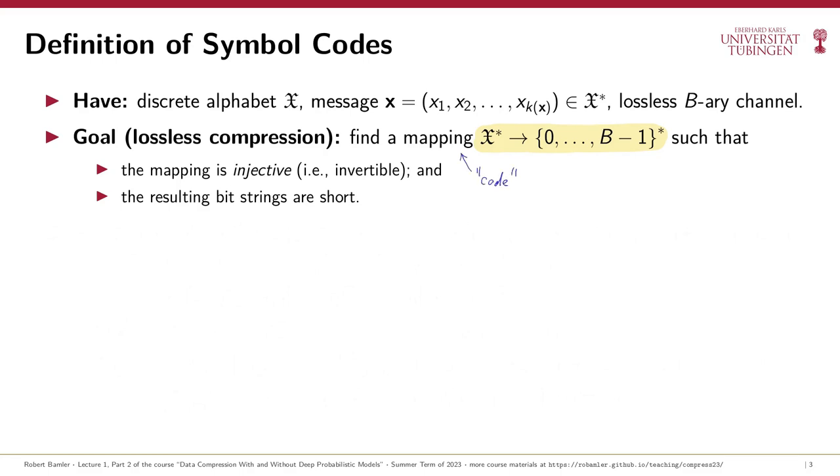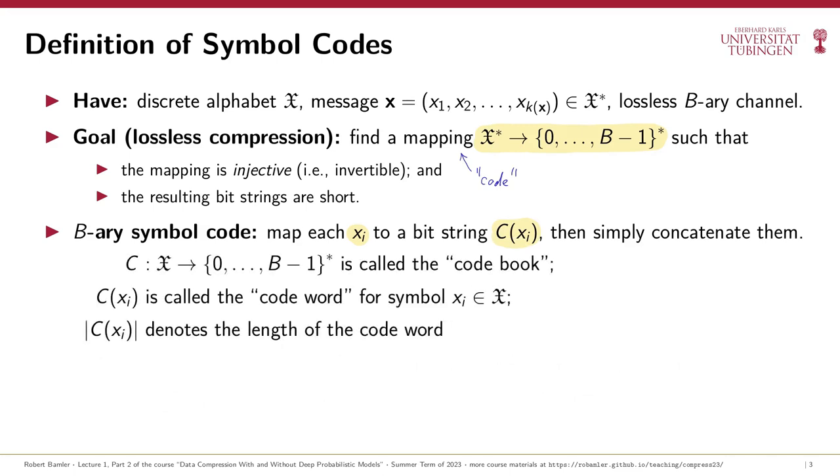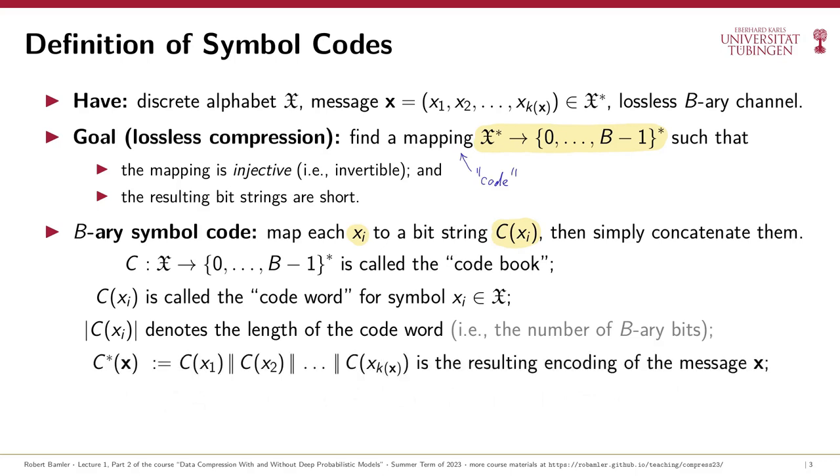Now, the simplest type of lossless compression codes are so-called symbol codes. What we do in a symbol code is that we break up the message into its symbols x sub i, where i indexes the position within the message, and we map each symbol to some bit string c of x sub i, which we call the codeword of x sub i. We denote the length of a codeword, that is, the number of bits that make up a codeword, by modulo of c of x sub i, and we then do something very naive. We simply concatenate these codewords for all symbols in the message, and we don't bother about introducing any delimiters between codewords. So the length of the compressed message, which is also called the bitrate, is just the sum of the lengths of the codewords for all symbols that make up the message.